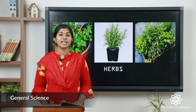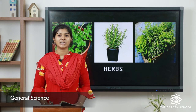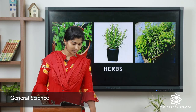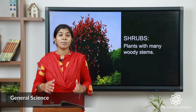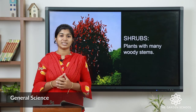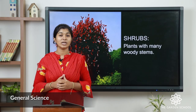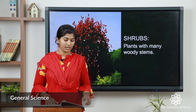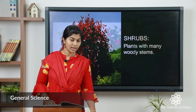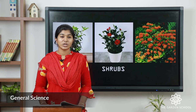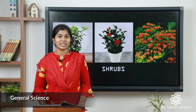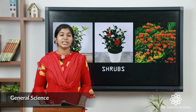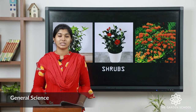The third one is called shrubs. Plants with more woody stems are called shrubs. For example, the rose plant and the tulasi plant.